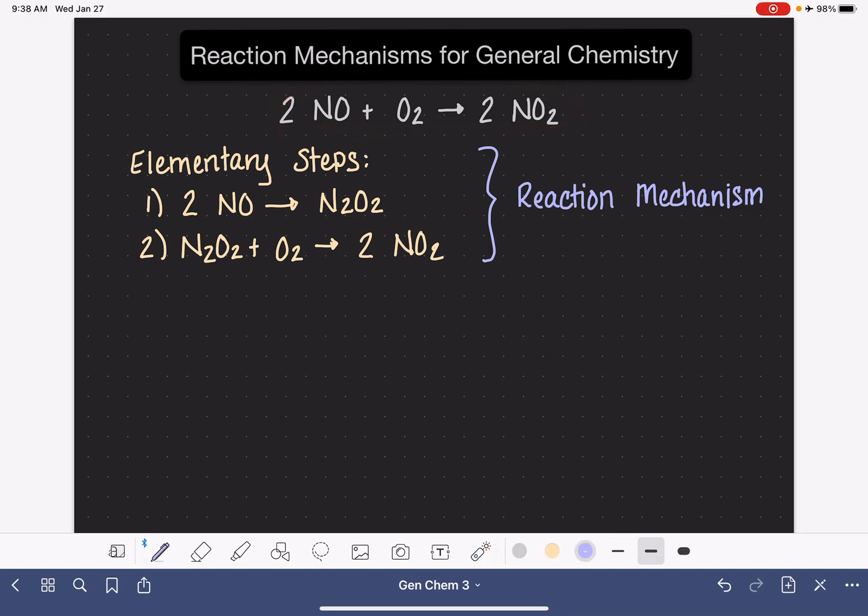Let's talk a little bit about this N2O2 thing that is formed in step one. N2O2 is what we refer to as an intermediate. An intermediate is a molecule that is formed in the elementary steps, and it's also consumed in the elementary steps.